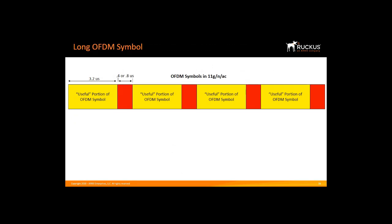The diagram at the top shows the OFDM symbol for 11G, N, and 11AC. The red portion represents the preamble, and the yellow portion is the useful data portion composed of OFDM symbols. OFDM works by transmitting data for 3.2 microseconds, then transmitting a guard interval, and repeating the process. The guard interval is either 0.4 or 0.8 microseconds. A 0.4 microsecond guard interval is called a short guard interval. This means that OFDM has about a 20% overhead rate, so effectively 20% of the airtime is wasted.